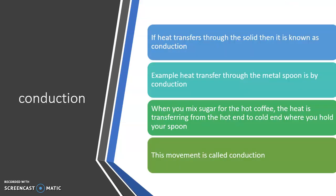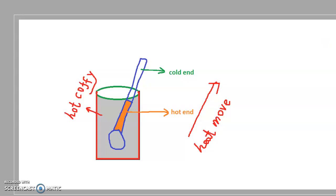Heat transfer through a solid is called conduction — heat moves from one point to another. For example, if you want to stir sugar into hot coffee, the heat energy transfers from hot to cold. As shown in my diagram, you immerse a metal steel spoon into the cup of coffee, and the heat transfers from the hot end to the cold end — only one direction, never from cold end to hot end.